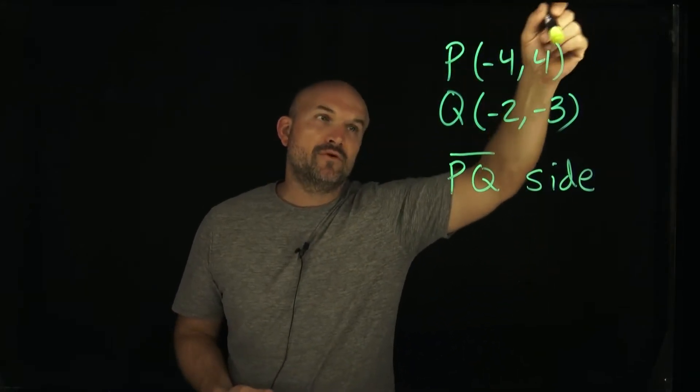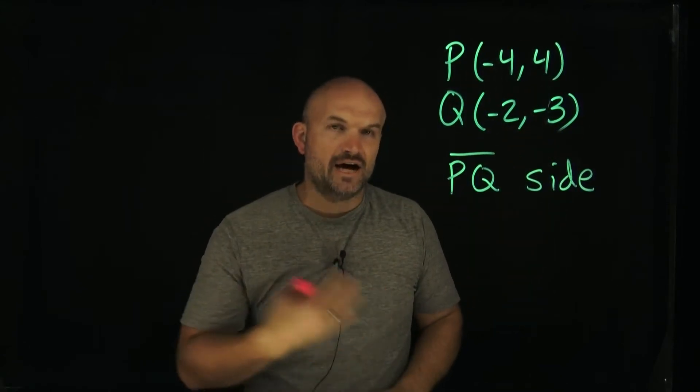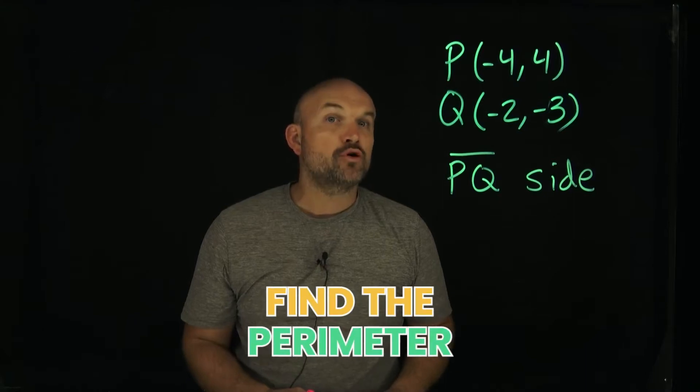We're given two points here, P(-4,4) and Q(-2,3), and that represents a side of a square. And what we need to be able to do is find the perimeter.